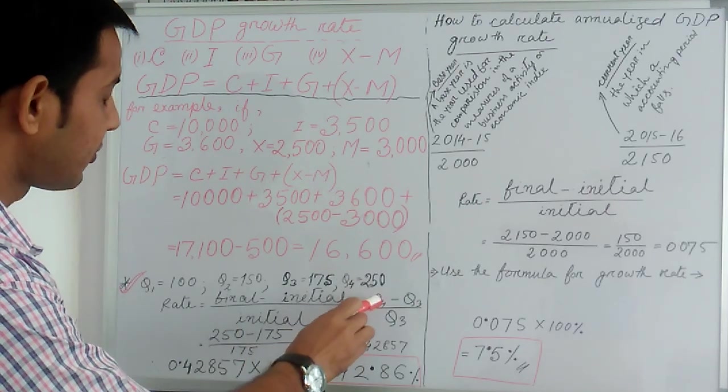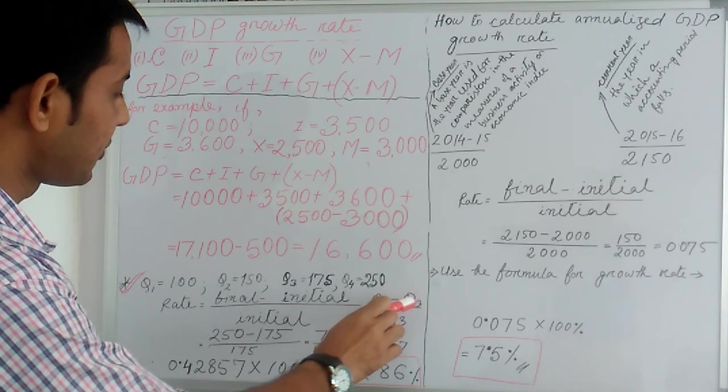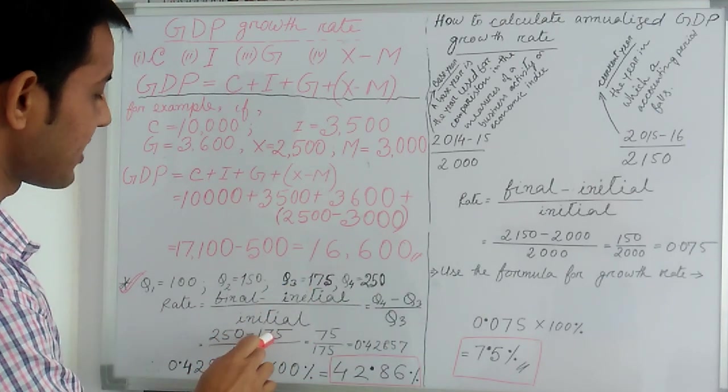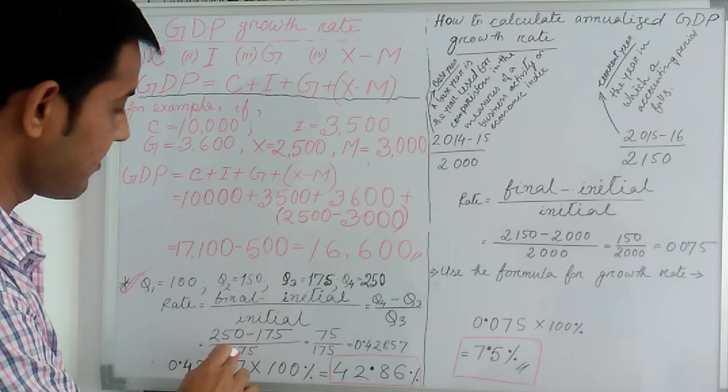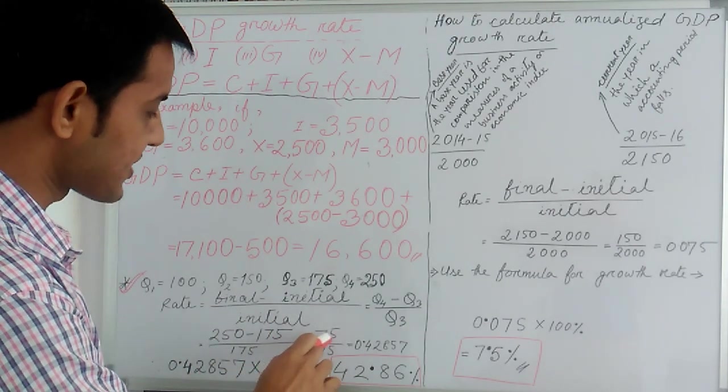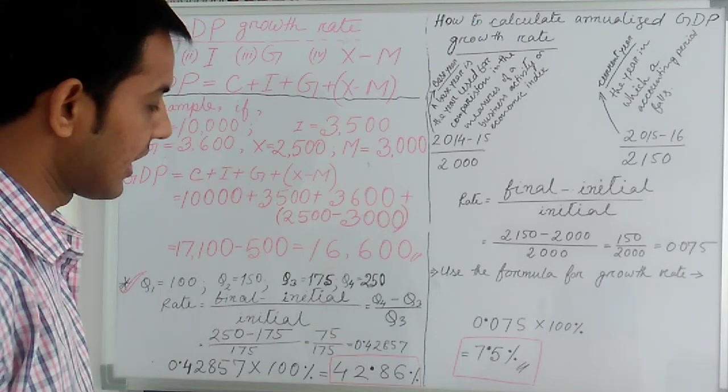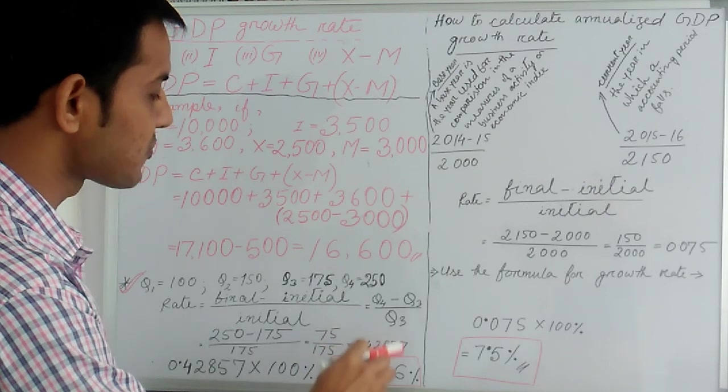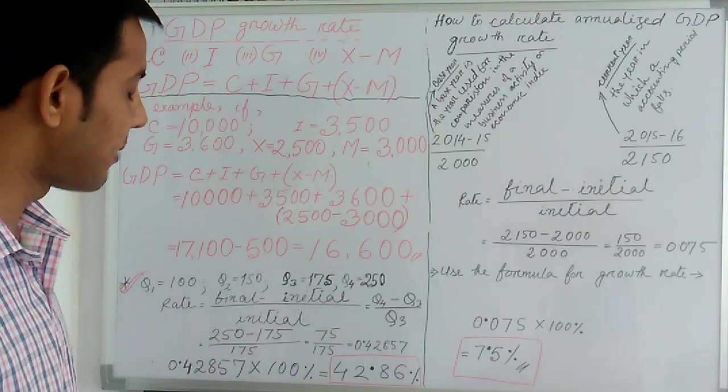So Q4 minus Q3 divided by Q3 means initial values. Putting these values: Q4 is 250, so 250 minus Q3, 175, divided by initial means 175 equals 75 divided by 175 equals 0.42857.